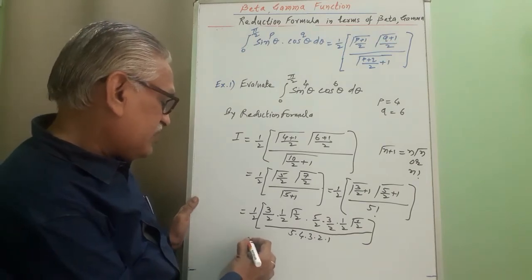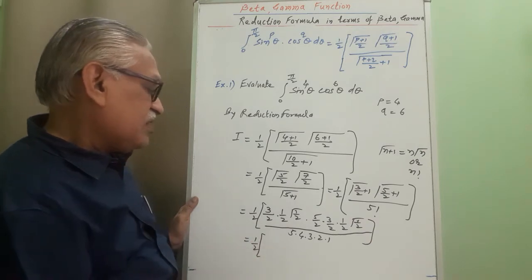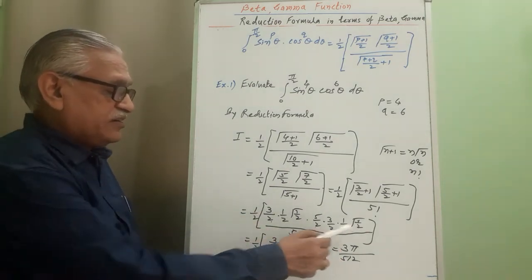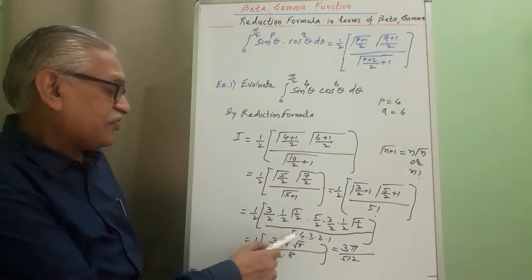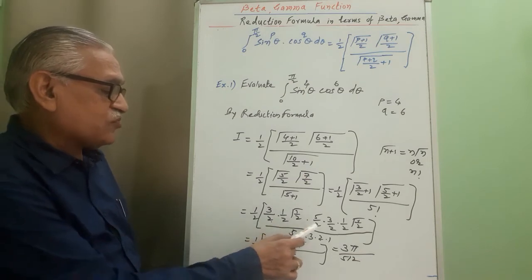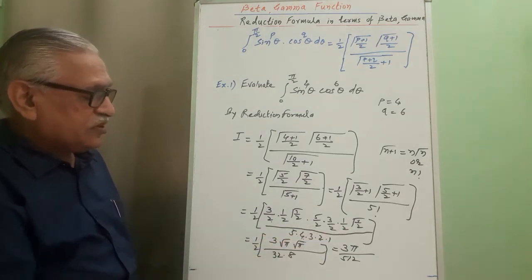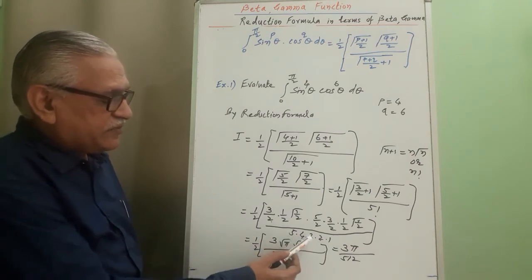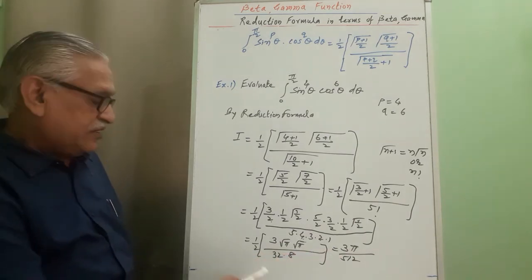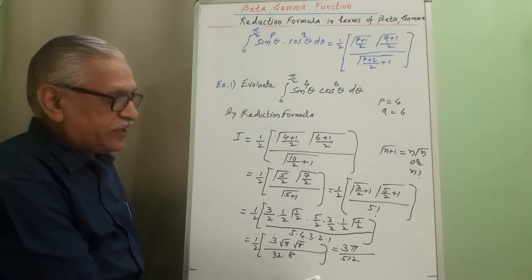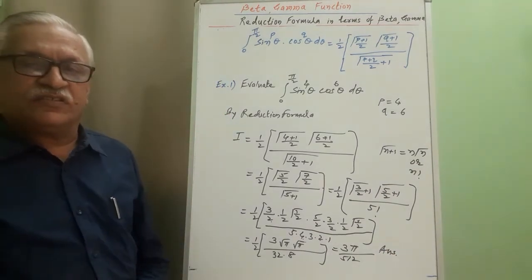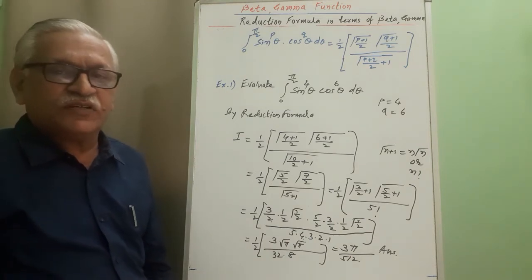Simplifying the expression, with 3 cancelling with 3, 5 cancelling with 5, and gamma(1/2) equals √π appearing twice giving π, the product of the remaining numerical terms in numerator gives 3π over the denominator 5 factorial product terms. After combining all factors, the final answer for this definite integral is 3π/512, obtained using the reduction formula in terms of beta gamma functions.